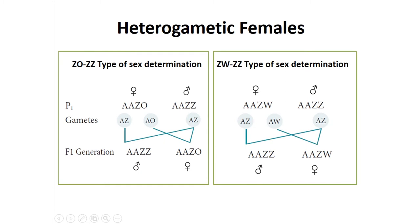In ZO/ZZ type, the females are heterogametic — they produce two types of eggs: one carrying the Z chromosome and one without a sex chromosome. The males are homogametic, producing only one type of sperm. Here, sex is determined by the female because they are heterogametic. In ZW/ZZ type, the females are also heterogametic producing two types of eggs, while males are homogametic, so the sex is again determined by the female.